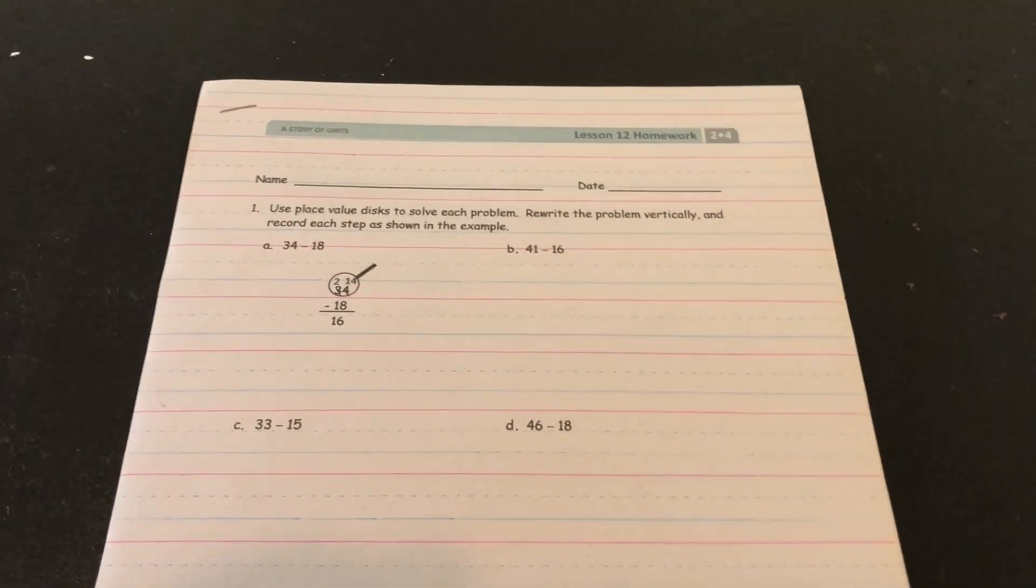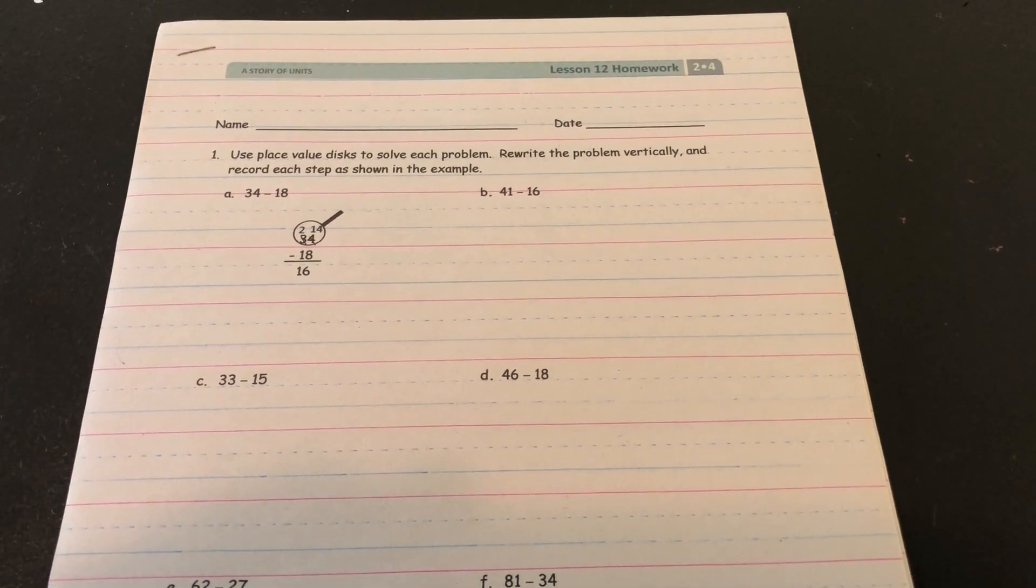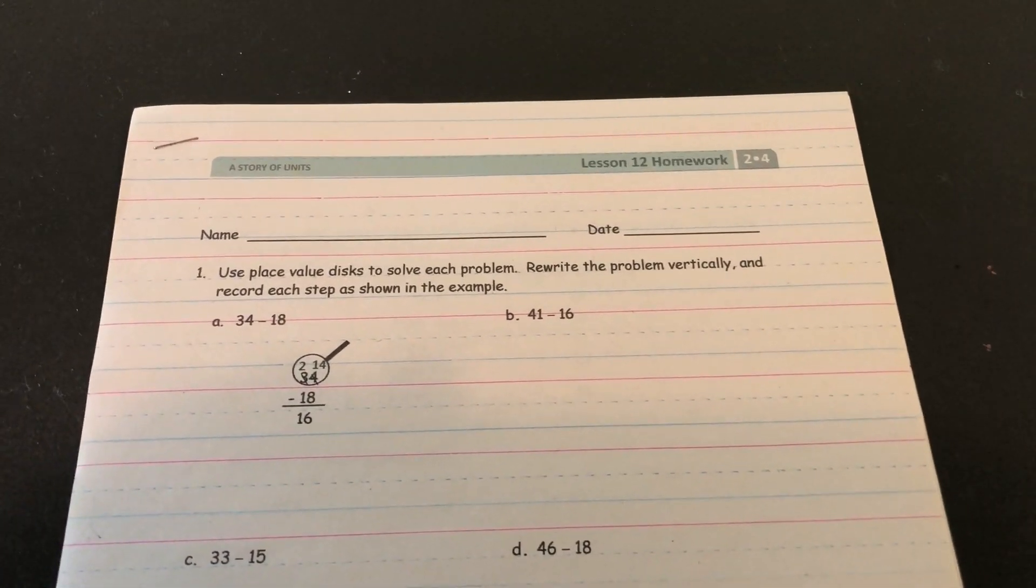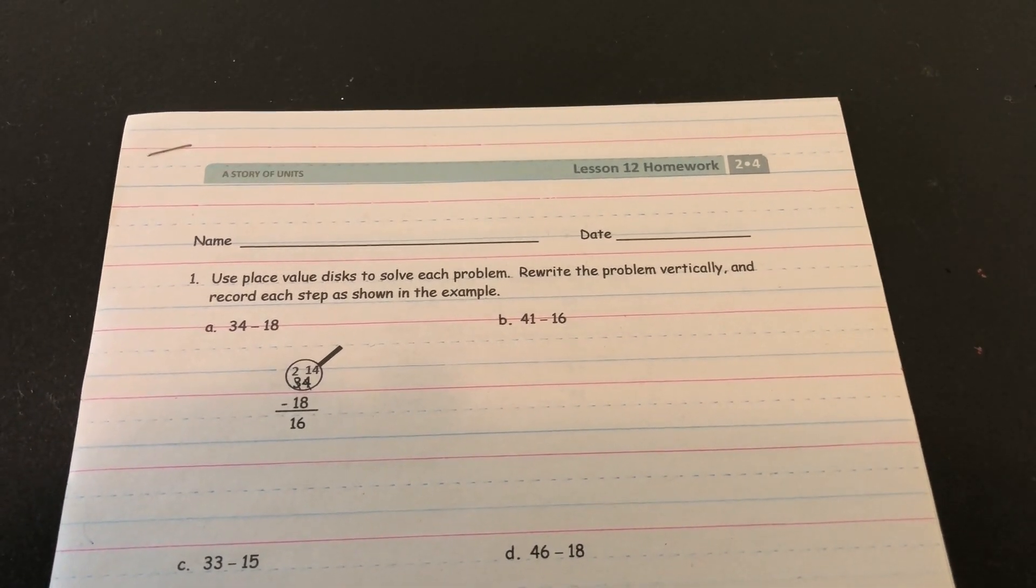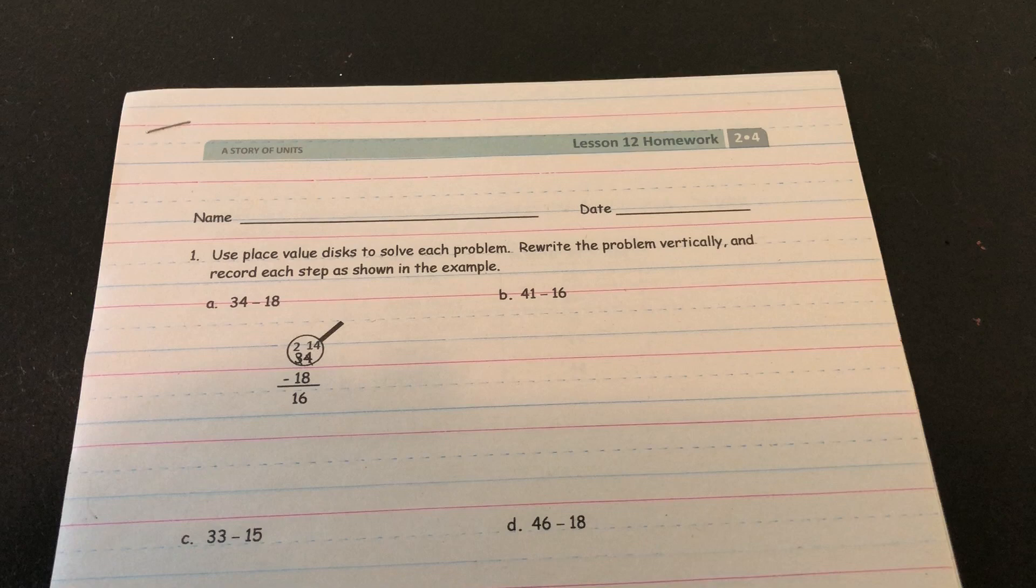Hi boys and girls! Today we're going to be looking at Module 4 Lesson 12's homework. It starts off by saying, use place value disks to solve each problem. Rewrite the problem vertically and record each step as shown in the example.